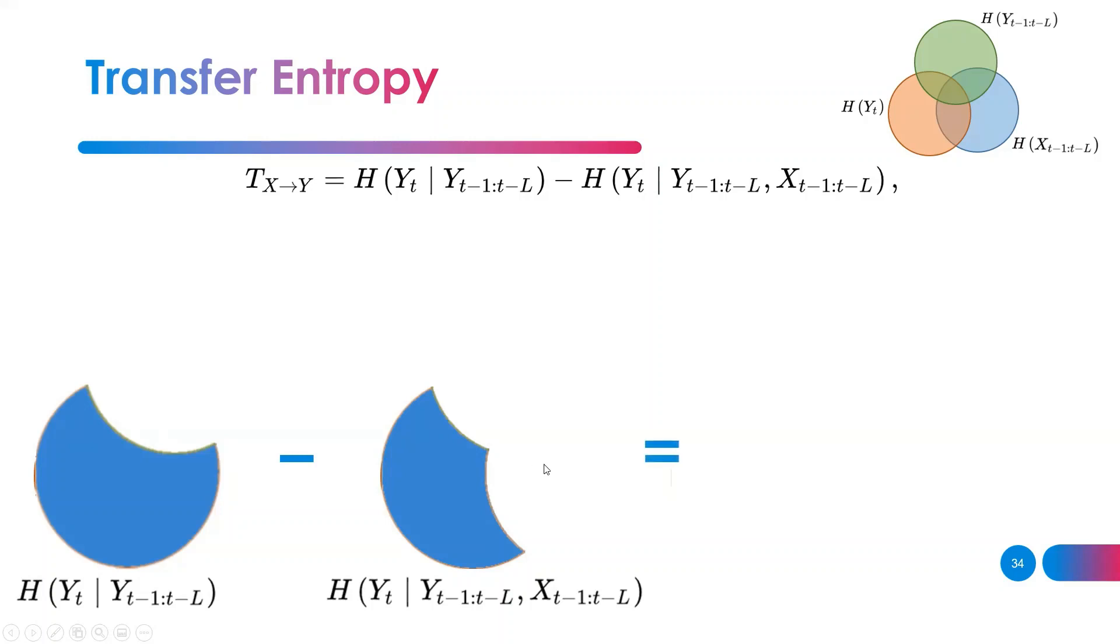Can you tell me what is the difference between the two? Obviously it's just this portion, and that's your T of X to Y.